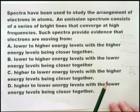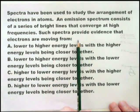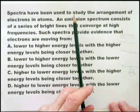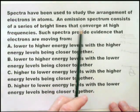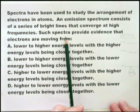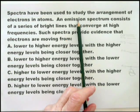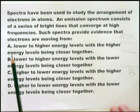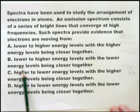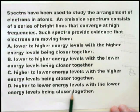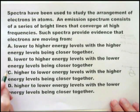Going back to the question: it's used to study the arrangement of electrons in atoms — that is true. An emission spectrum consists of a series of bright lines that converge at high frequencies, and such spectra provide evidence that electrons are moving from a higher level to a lower level. So it can't be A or B. Higher to a lower level with levels at the higher energy level closer together — that's true. Higher to lower with the lower energy levels being closer together? No. So the answer is immediately C.